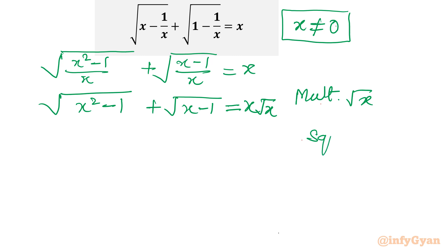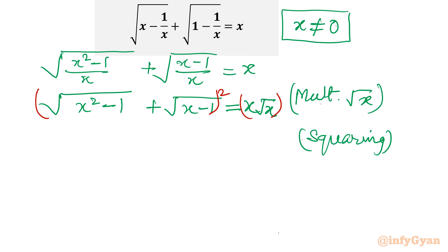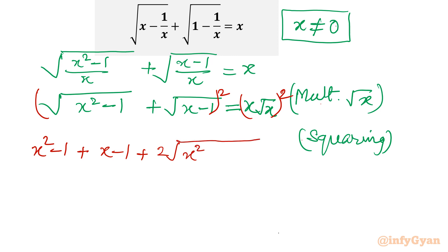Now I will take squaring of both sides. Using the identity (a + b)² = a² + b² + 2ab: a² gives (x² - 1), b² gives (x - 1), and 2ab clubs both square roots together. The right-hand side becomes x³.